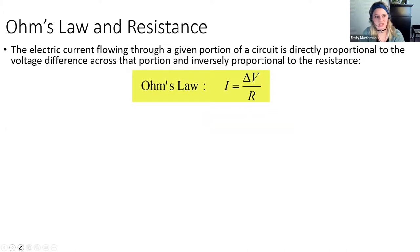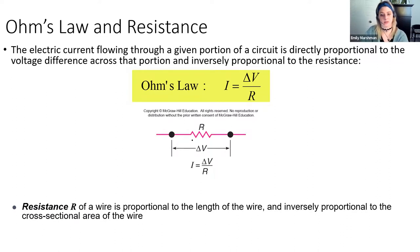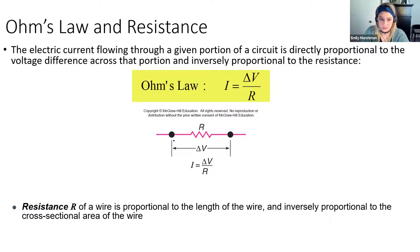What is the relationship between electric potential, resistance, and current? Ohm's Law tells us that the current flowing through a portion of the circuit is proportional to the voltage difference across that portion and inversely proportional to the resistance. Across a resistor like a light bulb, there will be a potential drop. Using Ohm's Law, I can calculate the current flowing through the bulb if I know the voltage and resistance.